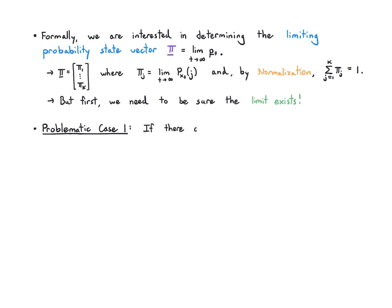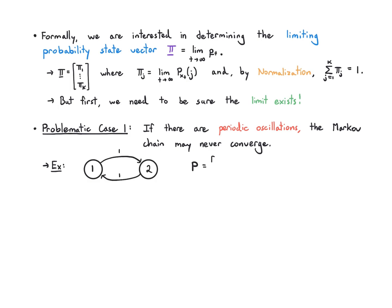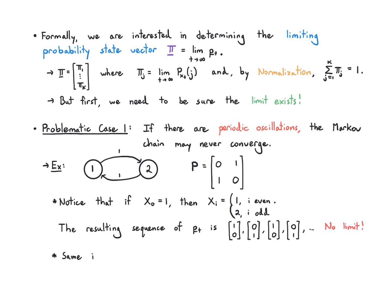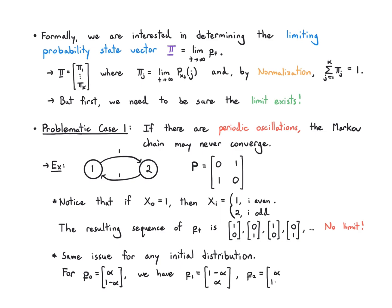One problem where the limit might not exist is when there are periodic oscillations in the chain. For example, a two-state chain with probability 1 of switching — where I never stay on my own state — means I go from 1 to 2 to 1 to 2 forever. I'm at state 1 on even times and state 2 on odd times, so the sequence just bounces and does not have a limit. Any initial distribution except (1/2, 1/2) will bounce around and not converge.